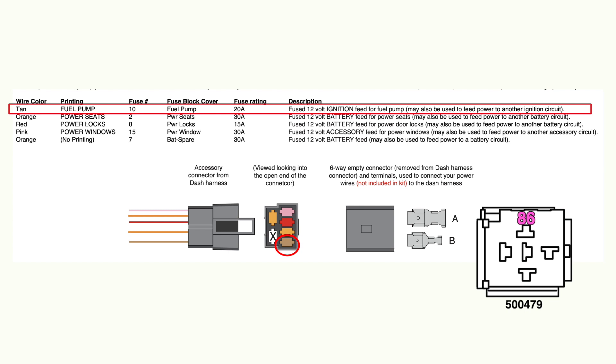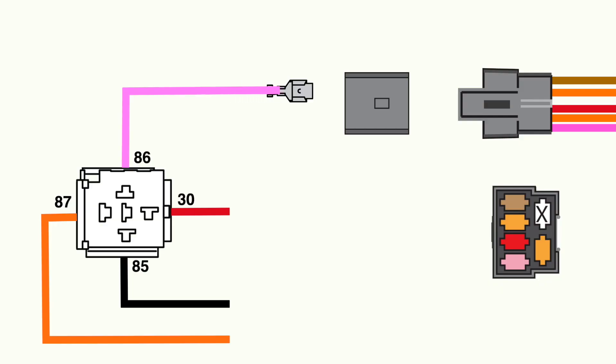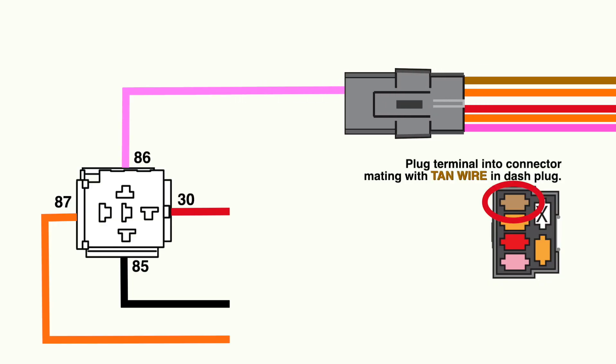Our 40 amp universal relay kit, part number 500479, works well as a fuel pump relay and will include a pre-wired relay base using the same GXL wire and GM color coding as our full chassis kits.